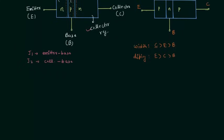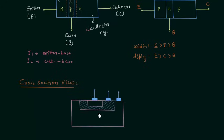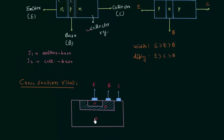The next thing is the cross-sectional view of the transistor. The emitter region is on one side with its emitter terminal, the base region is in the middle with its base terminal, and the largest region is the collector region with its collector terminal. This is the cross-sectional view of the NPN transistor.